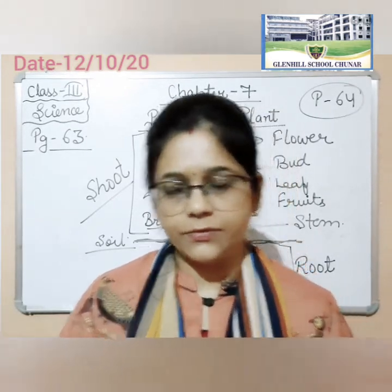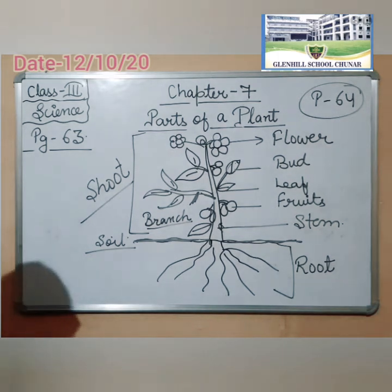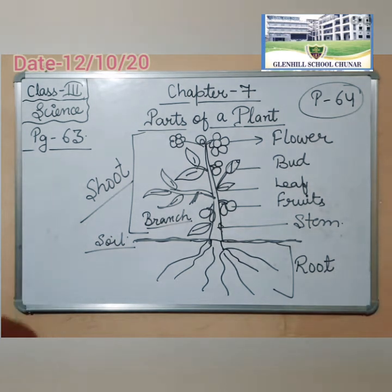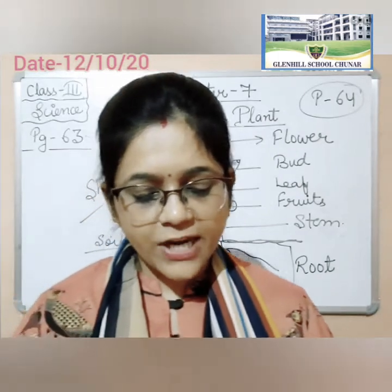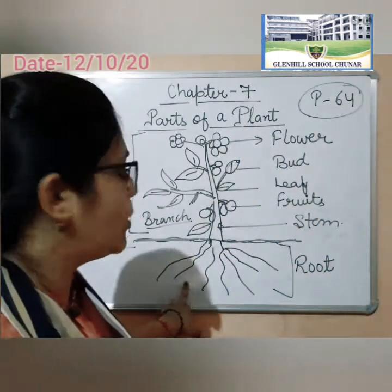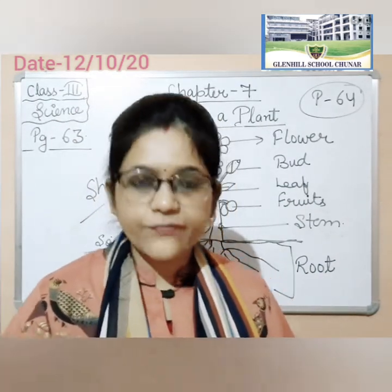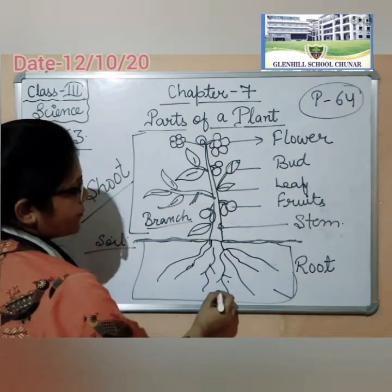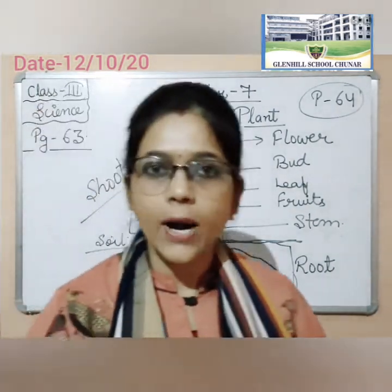Now let's see about the root. On page 64, see root. Now root usually grows deep below the ground. Root jo hai wo deep below the ground yeh grow hota hai. And it fixes the plant within the soil and absorbs water, minerals and nutrients from the soil. Yeh soil se in sab ko plants ko provide karta hai — root.